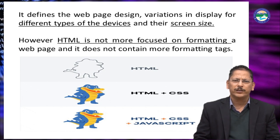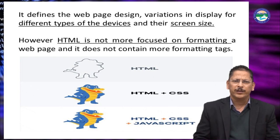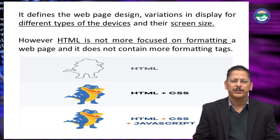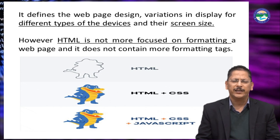HTML is not more focused on formatting, but CSS is more focused on formatting. HTML just shows any picture, but when we use HTML and CSS together, CSS makes the format more attractive — it fills color and applies many formatting properties to display an attractive picture. When we include a scripting language like JavaScript with HTML and CSS, animation also becomes part of the image.